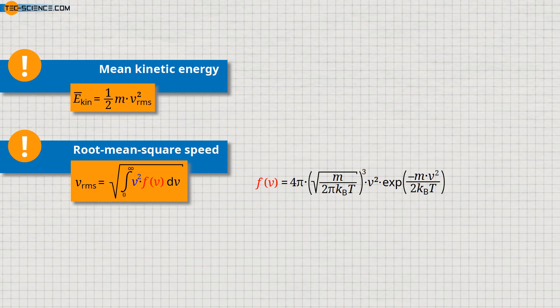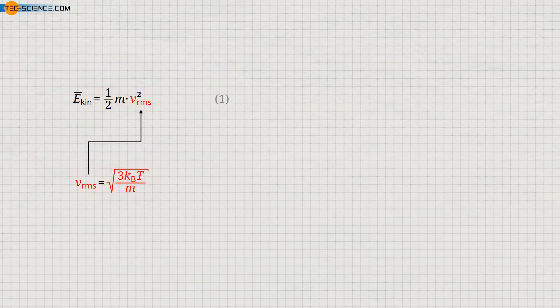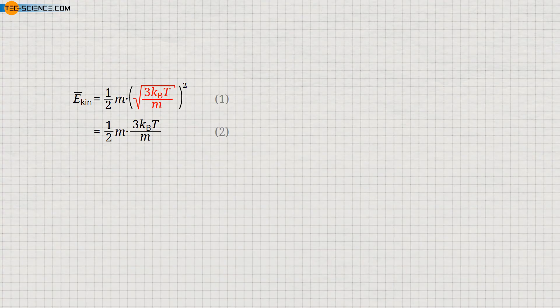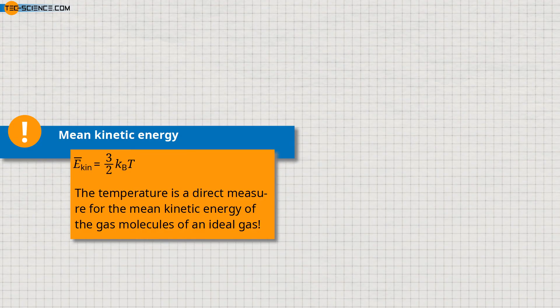We do not want to solve this integral in detail here, but only show the result with the given formula. We can now use this result in the formula for the calculation of the mean kinetic energy. First, we can eliminate the root and get equation 2. In equation 2 we can cancel out the mass, and we finally get a very simple relationship between the mean kinetic energy of the molecules and the temperature of the gas. It turns out that the mean kinetic energy of the molecules depends only on the temperature. Thus, the temperature is a direct measure for the mean kinetic energy of the gas molecules of an ideal gas. This equation is remarkable because it links a macroscopically measurable quantity — temperature — to a microscopic quantity — the kinetic energy of a molecule.